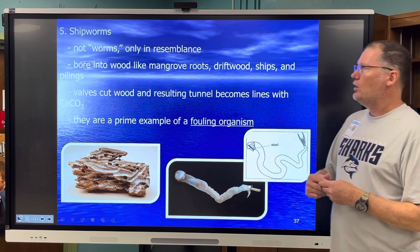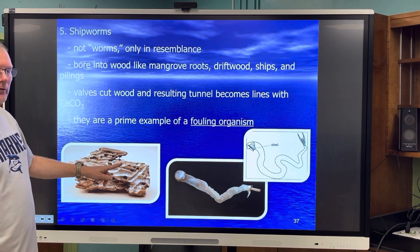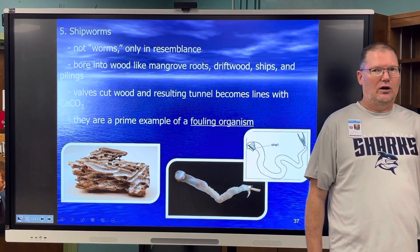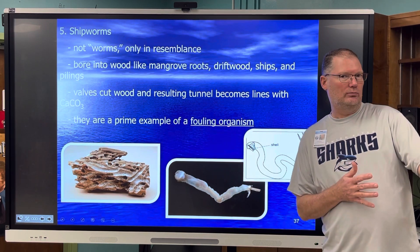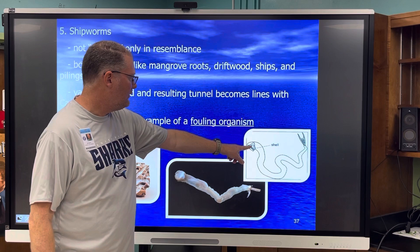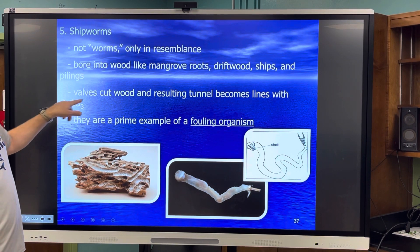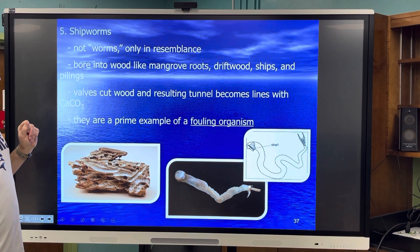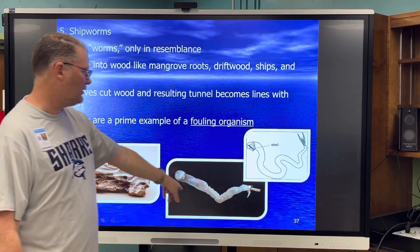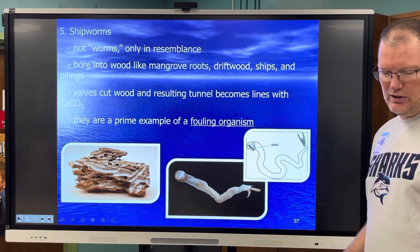Moving on from scallops to shipworms — they're not worms at all. They look like they might be worms because they tunnel through wood. You've probably seen driftwood washed up on shore with a bunch of holes in it. That's because this mollusk, which has a long body, uses its shell — its valves — to cut the wood and make a tunnel. You'll also find them in mangrove roots and pilings. That's the shell and the long body — really strange creatures. They call them shipworms but they are mollusks.